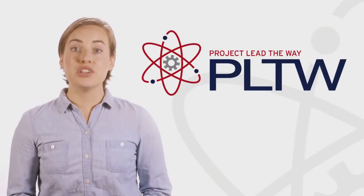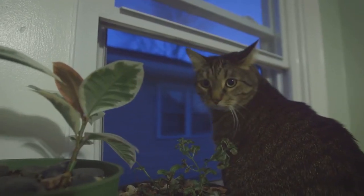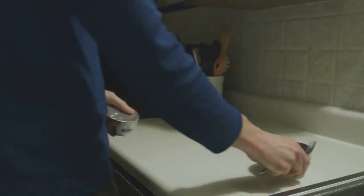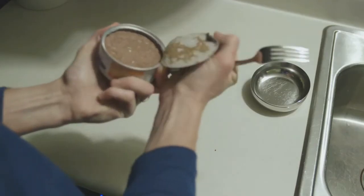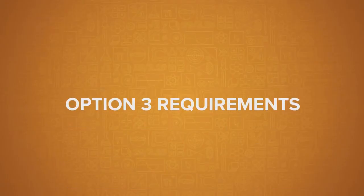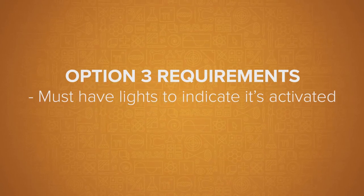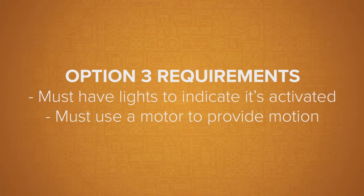The third problem option considers people or animals who may need assistance to retrieve something. If your team chooses this option, you'll design and program a mechanical dispenser to deliver a useful object when an environmental action occurs. The device must have lights to indicate that it's been activated and must use a motor to provide motion.